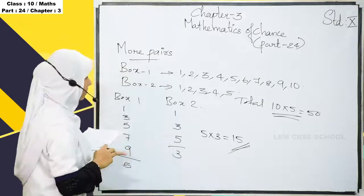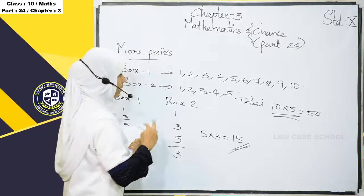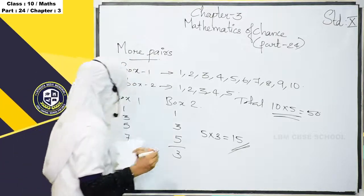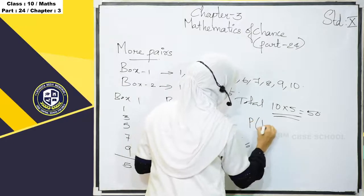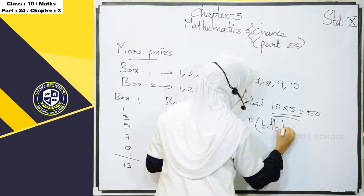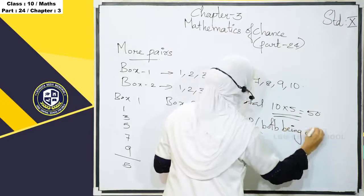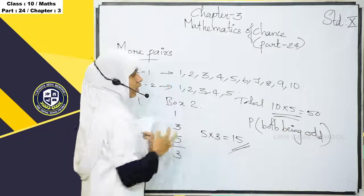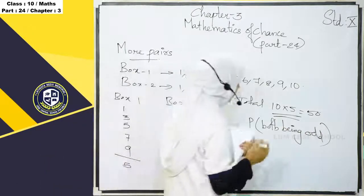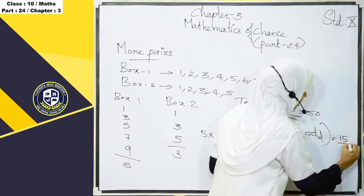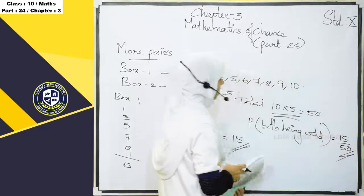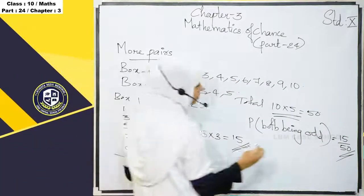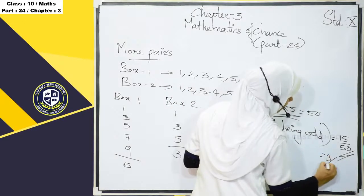The probability of both numbers being odd: possible odd pairs divided by total pairs. That is 15 by 50, which simplifies to 3 by 10. So P(both being odd) = 3/10.